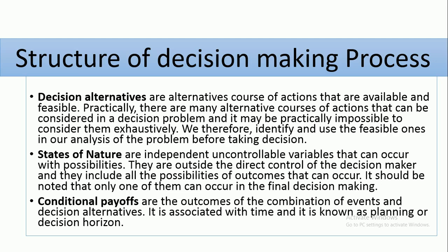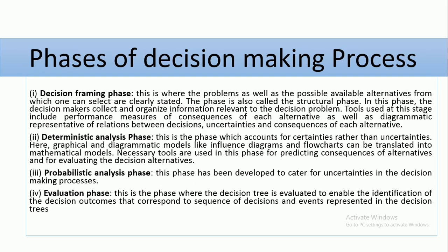What are the phases of the decision-making process? The first is the decision framing phase, which is a structural phase. The second is the deterministic analysis phase, which accounts for certainty rather than uncertainty. The third is the probabilistic analysis phase, which caters for uncertainty that can evolve in the process. The fourth is the evaluation phase, where you identify decision outcomes that correspond to the sequence of decisions and events represented in the decision tree.